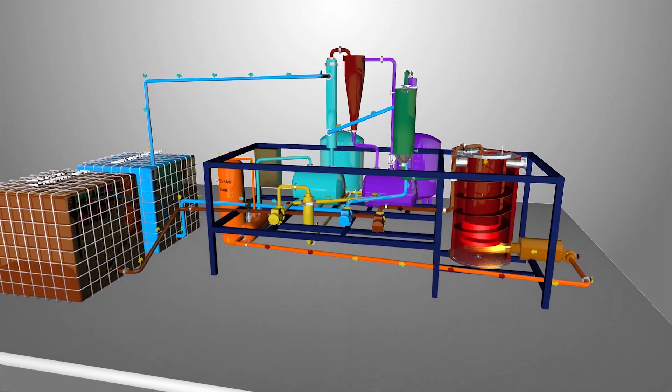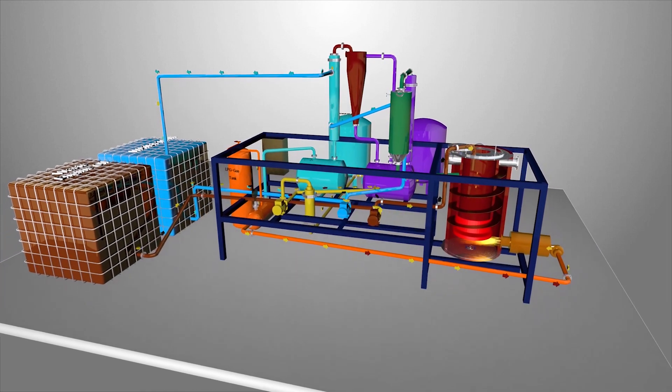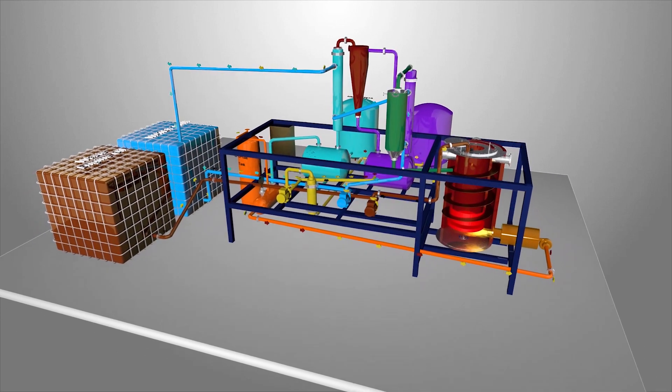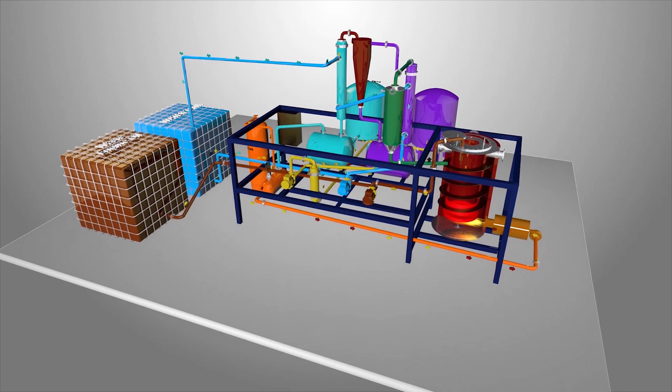The pyrolysis plant is pre-installed on a skid, easily transportable and self-sustaining via a closed-loop process. The produced syngas delivers all the energy that is needed to run the plant.